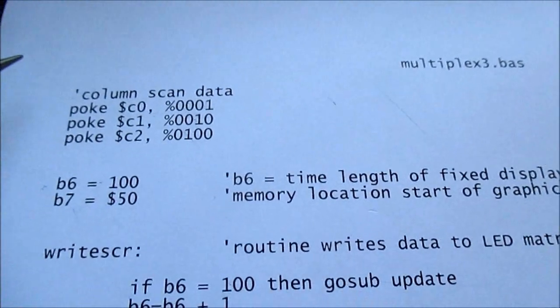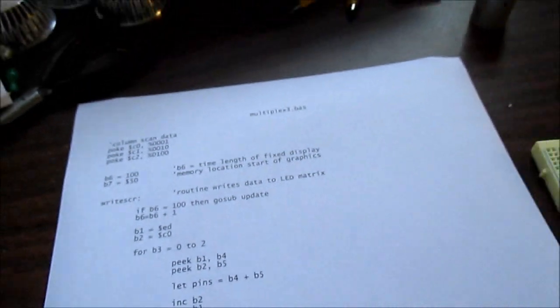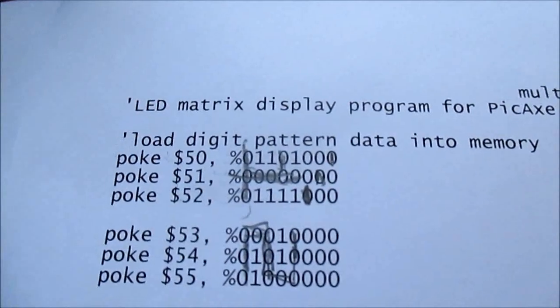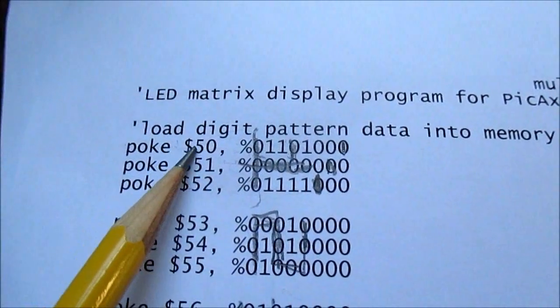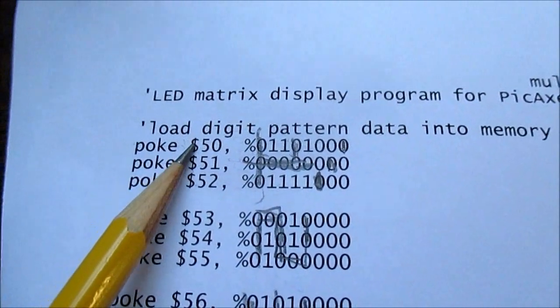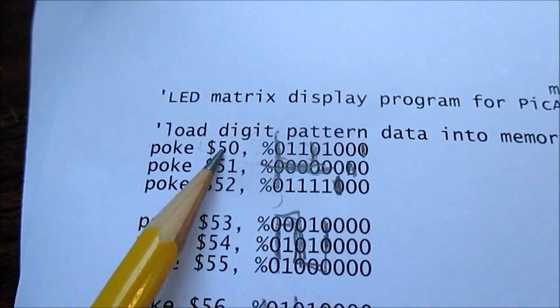So again, I poked, poke man just stores the information into memory location. So I started at, that's string 50, that's hexadecimal location.